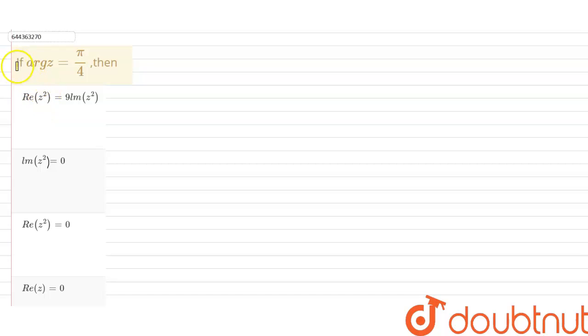In this question it is given that if argument of z equals π/4, then let z equals x plus iota y.